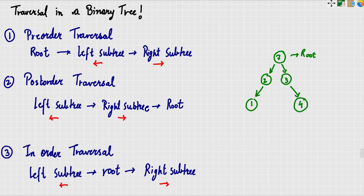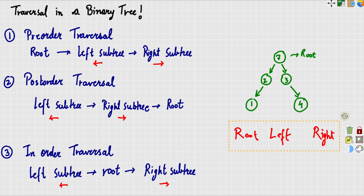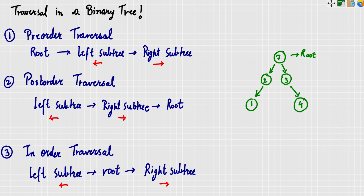Just remember: for all traversals, left sub-tree comes before right sub-tree. If you want to place root among 3 positions, first write left sub-tree then right sub-tree. For pre-order, root comes first — root, left, right. This is a memory trick I am sharing with you.